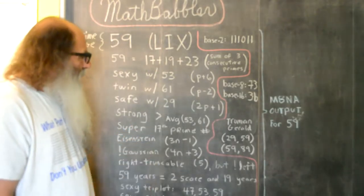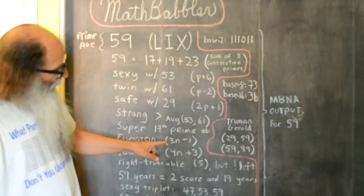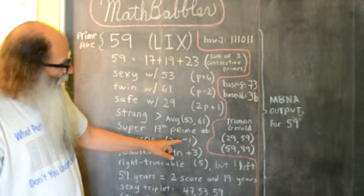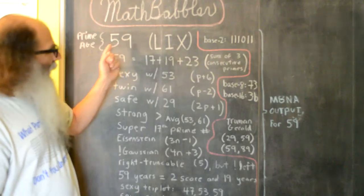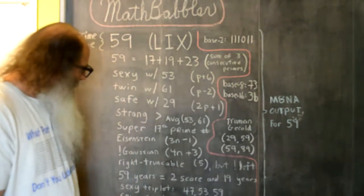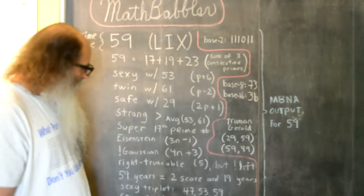It's an Eisenstein prime because it follows this form here: 3 times some whole number minus 1 equals 59, and in this case the whole number is 20. So that means it's an Eisenstein prime.